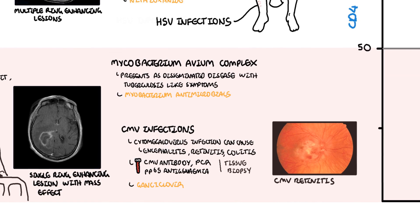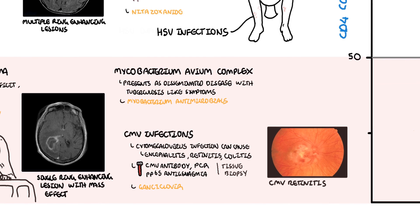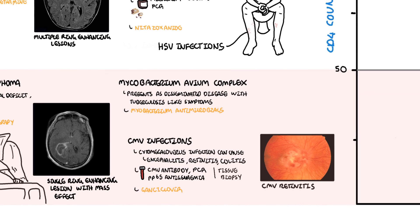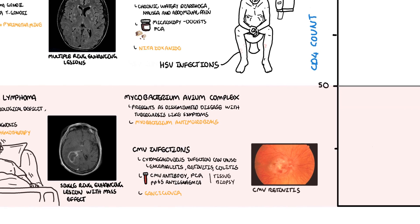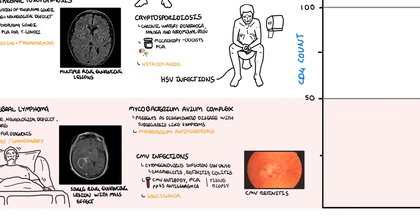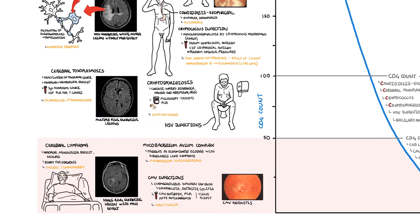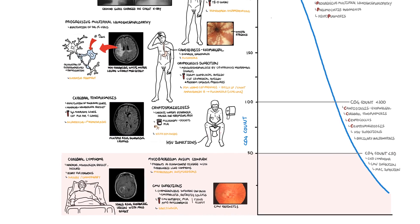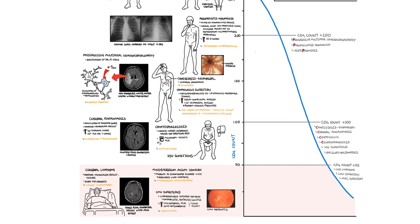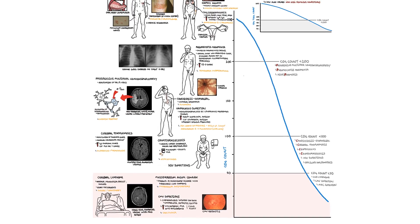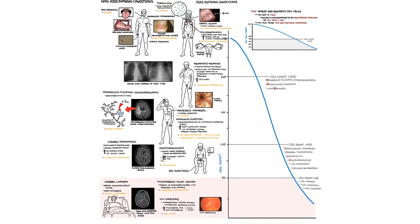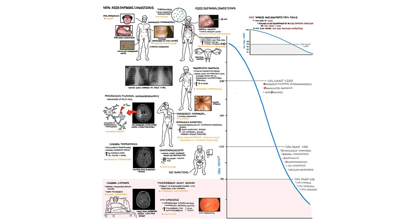That concludes this video. We first focused on non-AIDS defining conditions and then talked about AIDS defining conditions, which typically occur when the CD4 cell count falls below 200. Conditions such as cervical cancer and tuberculosis can occur when the CD4 count is above 200. As the CD4 count reduces, more opportunistic infections and malignancies can occur, such as CMV-related infections, herpes simplex-related infections, and primary CNS lymphoma. Thank you for watching — I hope you enjoyed this video.